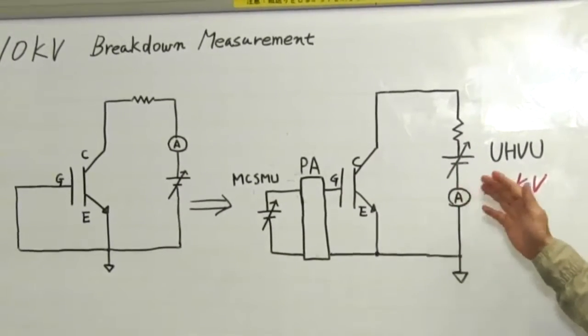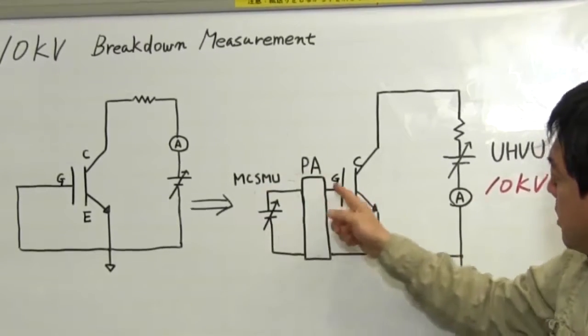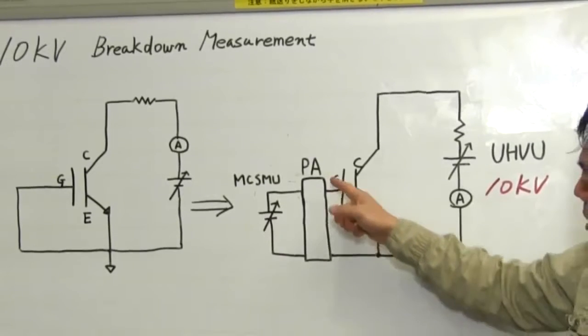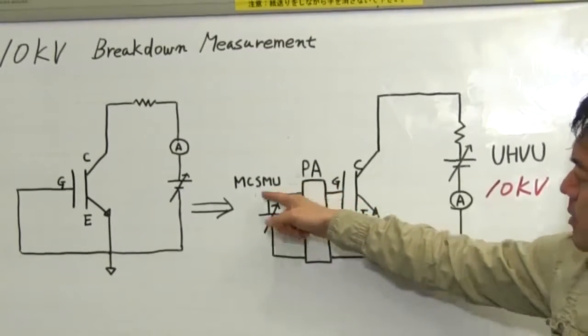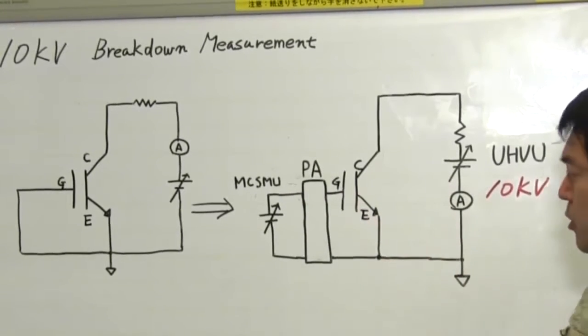I'd like to use this configuration. Instead of connecting a gate and emitter, I'd like to use medium current SMU to apply gate bias voltage.